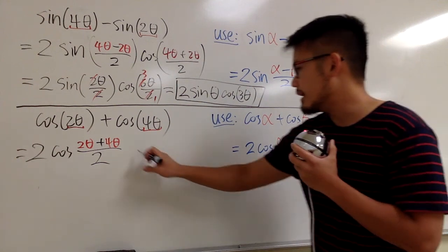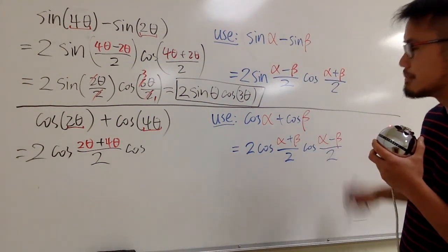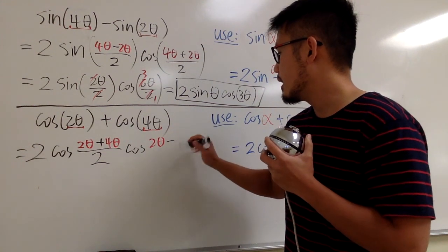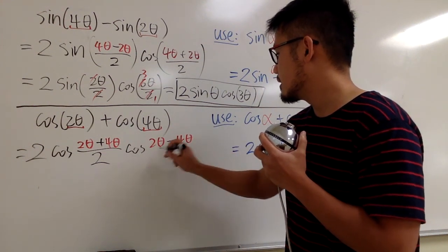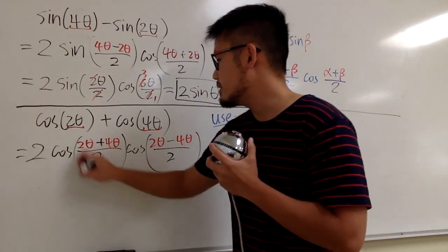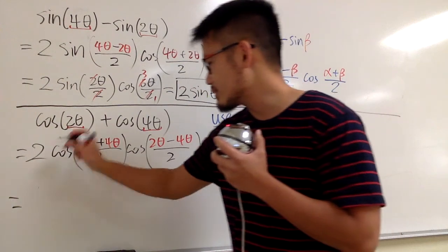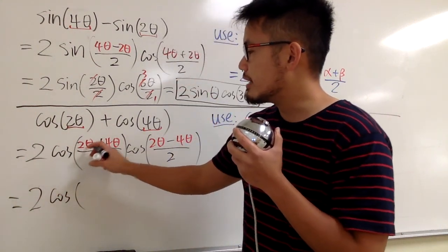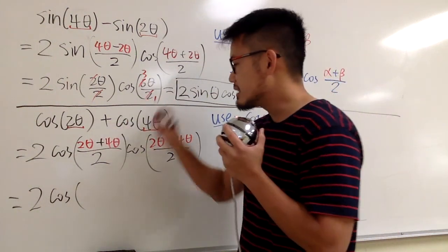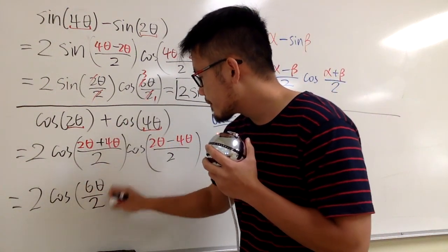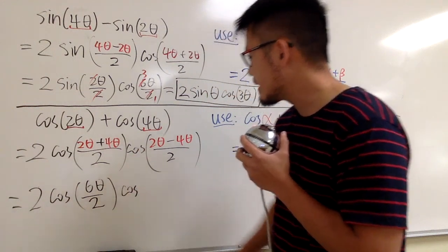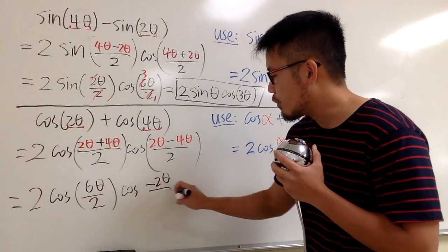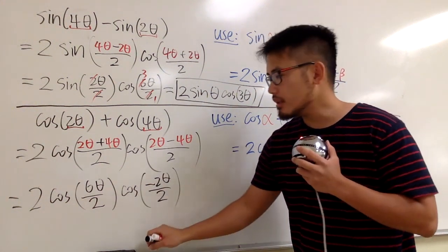And then over 2. And then we multiply by another cosine. And we have alpha minus beta, meaning 2 theta minus 4 theta, over 2. And let's put this in parentheses as well. And now what? Work this out. 2 is the 2 on our side, and we have cosine. And then here we have 2 theta plus 4 theta. That's 6 theta over 2. And then we multiply by cosine. 2 theta minus 4 theta is negative 2 theta over 2.